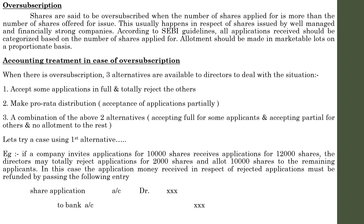We have discussed about one of the first alternatives a company will select in order to deal with oversubscription, where the company will accept some applications in full and totally reject the others. Whenever there is an excess application, all such excess will be rejected. Rejected means the amount will be refunded to the subscribers.